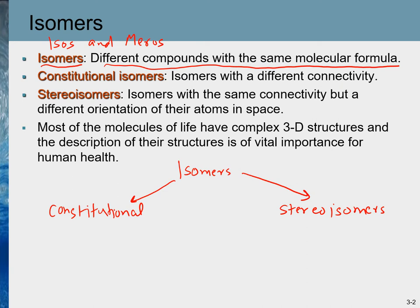In stereoisomers, the molecular formula as well as connectivity are the same, but the orientation in space is different. For example, these two substituted cyclohexane molecules have the same molecular formula; however, the connectivity of various groups is different, so these are examples of constitutional isomers.